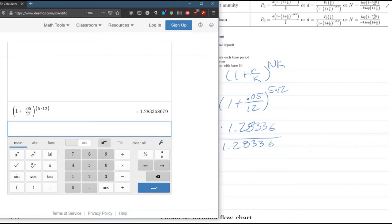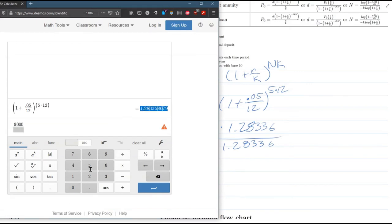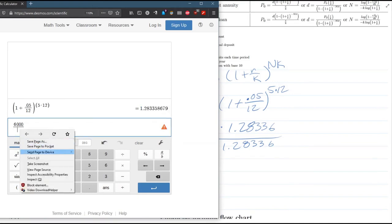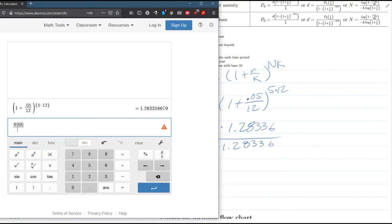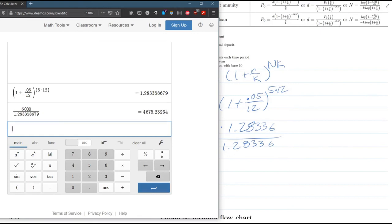So I'll hit enter to get that out of there. So it's 6,000 divided by, one thing you can do is grab that, copy, paste, copy, paste. I guess I'll just type it. 1.2833358679.